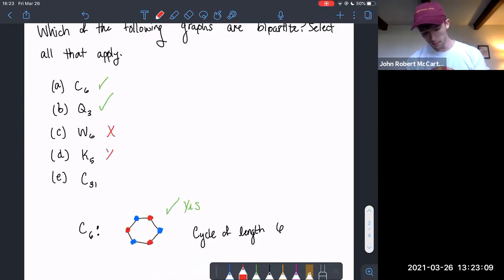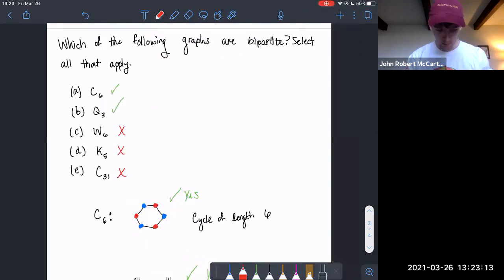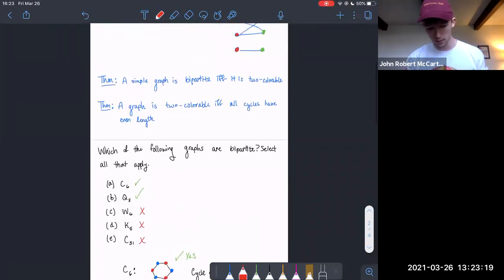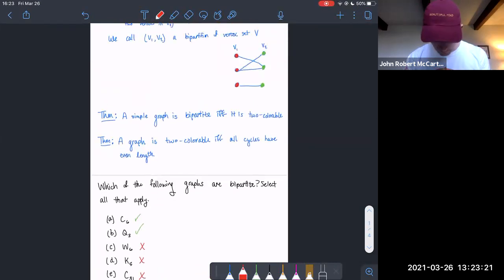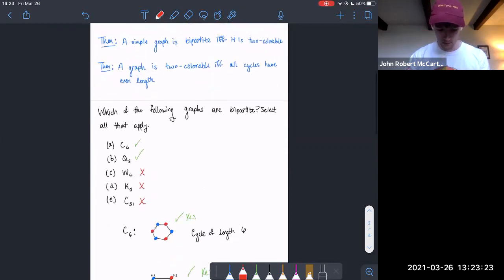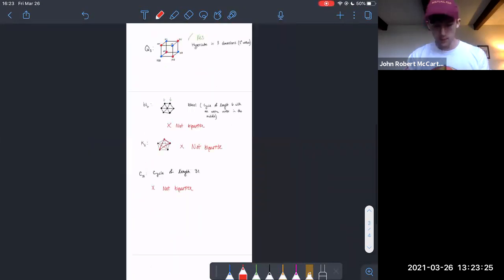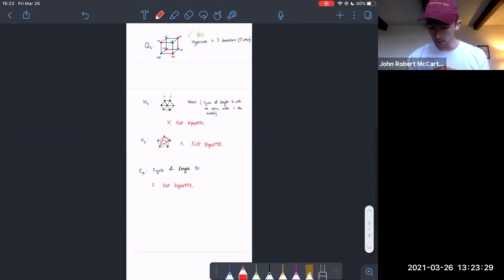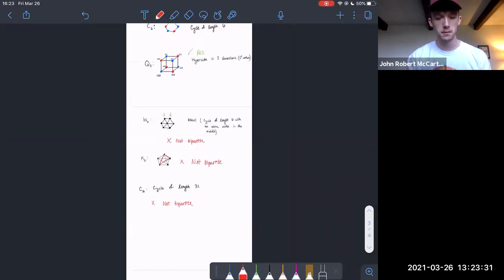So the last three are not. So all in all, we've shown that the first two graphs are bipartite and the last three are not using these two theorems. So as a takeaway, just remember, look for cycles of odd length. And if that doesn't work, then try to two-color the graph. If that doesn't work, then you've got a graph that's not bipartite.